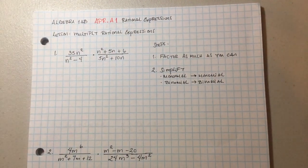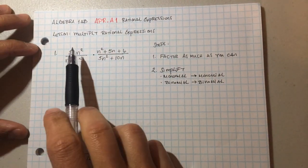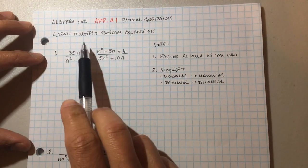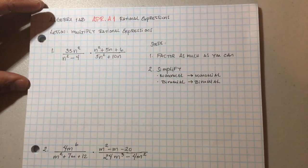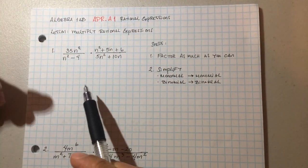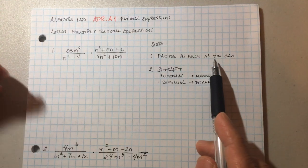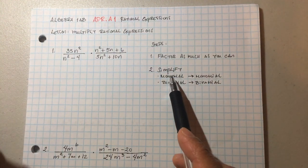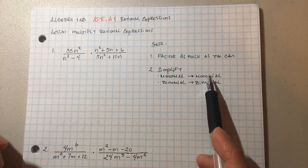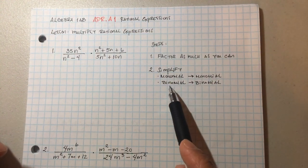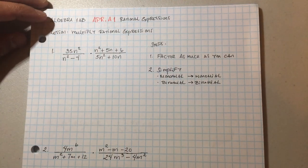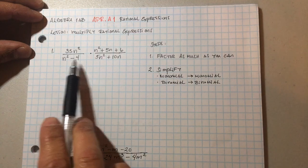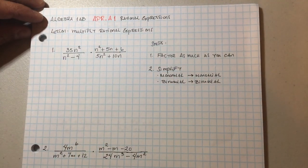Hey guys, today in this lesson we want to go ahead and continue on with simplifying expressions. Now we're going to be multiplying rational expressions. Just like the previous videos, we're going to factor as much as we can and then simplify. Remember that monomials factor out with monomials, binomials with binomials. In this video we're going to factor as much as possible before canceling.